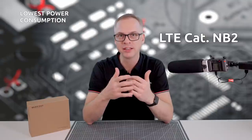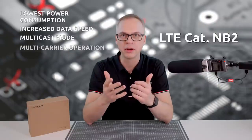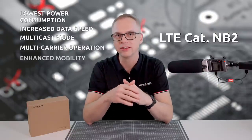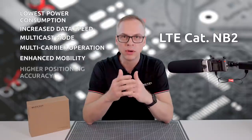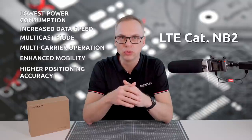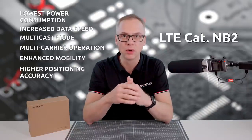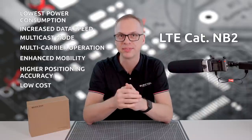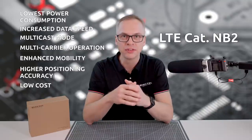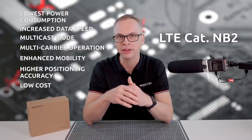Lowest power consumption with smaller batteries and, as a consequence, overall device size. Increased data speed rates and multi-cast mode, multi-carrier operation and enhanced mobility. Also higher positioning accuracy. These improvements we can note comparing NB-IoT Cat NB-2 to the previous NB-IoT standard. And the low cost. All these features make CAT NB-IoT the best-in-class leading LPWA technology.